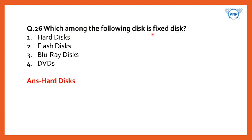Which among the following disks is a fixed disk? Options include hard disk, flash disk (pen drive), Blu-ray disk, and DVDs. All others can be attached and removed, but the hard disk is fixed inside the CPU and cannot be removed easily. It is very important for installing various software and programs. The answer is hard disk.